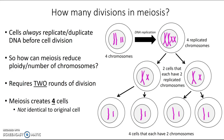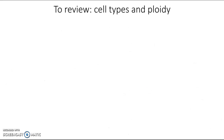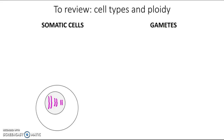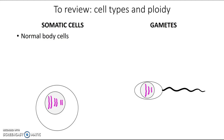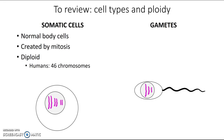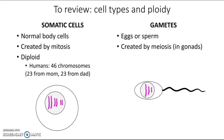Let's wrap up with a quick review of the new vocabulary on cell types and ploidy. Somatic cells are normal body cells created by mitosis; their ploidy is diploid — in humans, 46 total chromosomes, 23 from mom and 23 from dad. Gametes, on the other hand, are the eggs and sperm created by meiosis in the gonads; they are haploid, with one of each chromosome — 23 total in humans. We'll spend the next few days using all this information to learn about meiosis in more detail. See you in class!